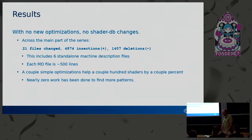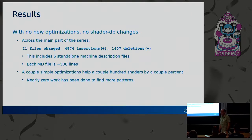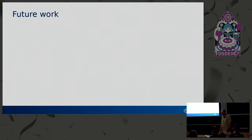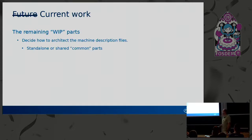At this point, almost no work has been done on finding new optimization patterns and clever tricks, but I have a big list of things I want to try. Finishing current work first: there are still a couple of patches marked work-in-progress. The big one is deciding what to do about the machine description files — keeping them standalone or extracting common parts. I think it's better keeping them standalone, where each is entirely independent, because as architectures change, less and less is truly shared across a large chunk of architectures, so it has diminishing returns. But it's still a debate to be had.